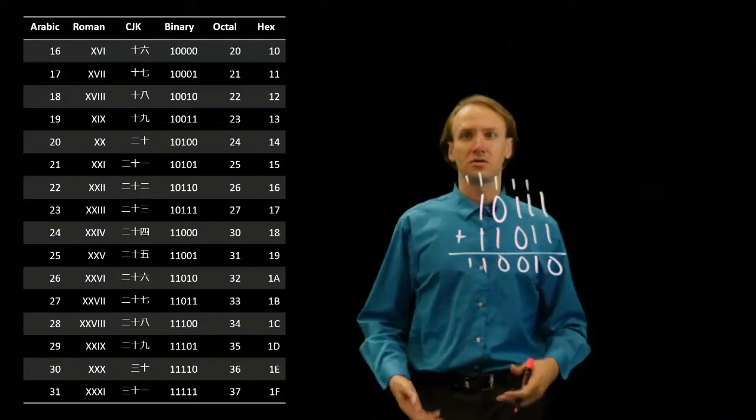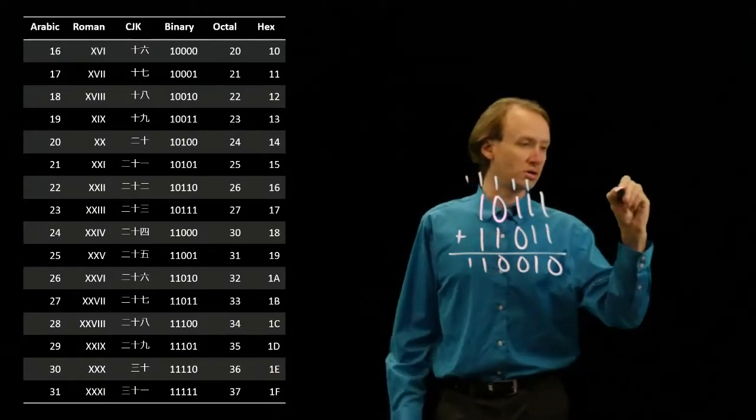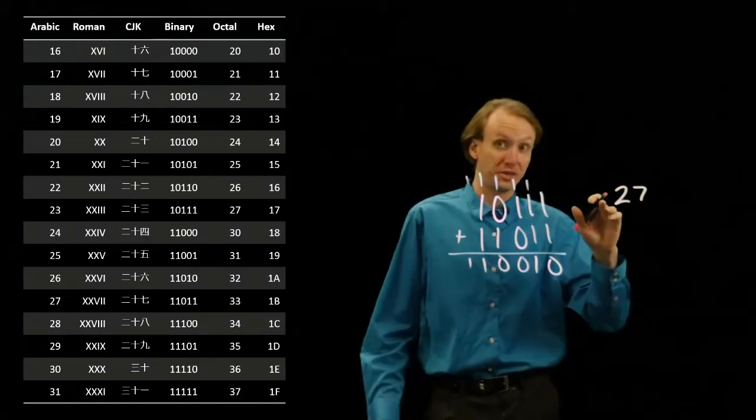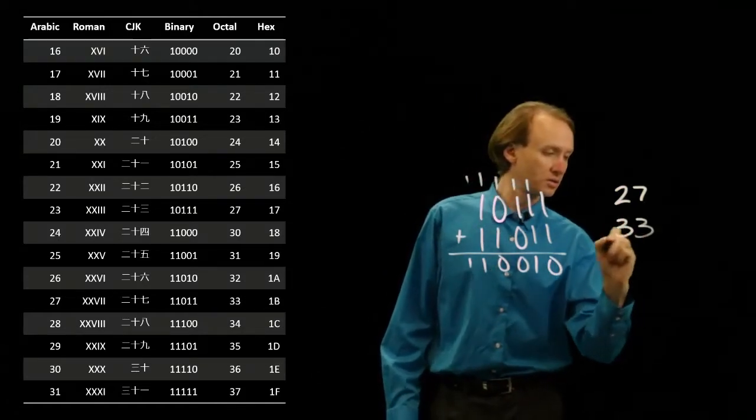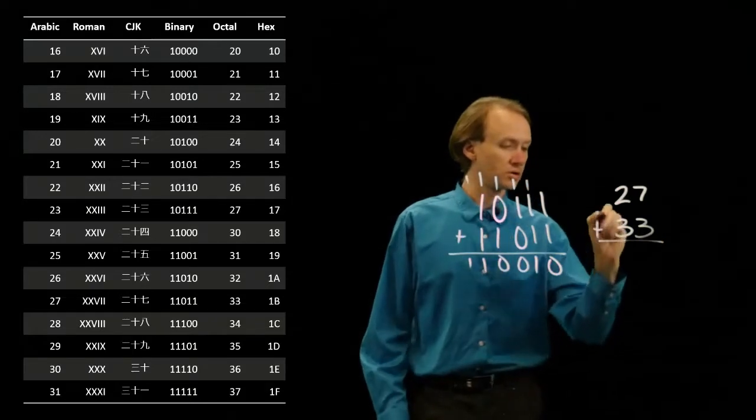In octal, those same two numbers are 27 for 23 and 33 for 27.